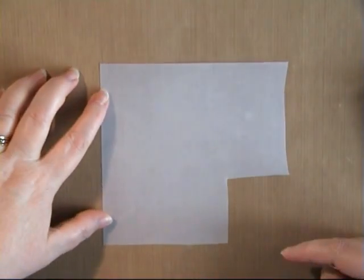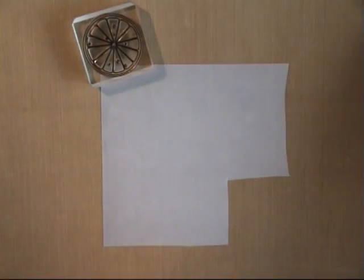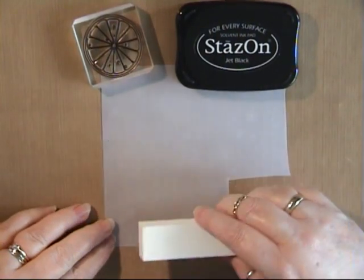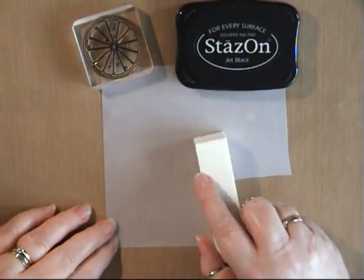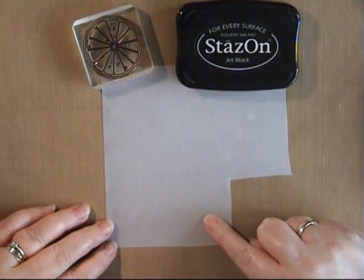You'll find a piece of shrink plastic in your pack and we're going to stamp a citrus slice using the stays on ink. To prepare your shrink plastic, you'll use a sanding block and sand it up and down and left and right. Gives it a little bit of a rough texture to stamp on.